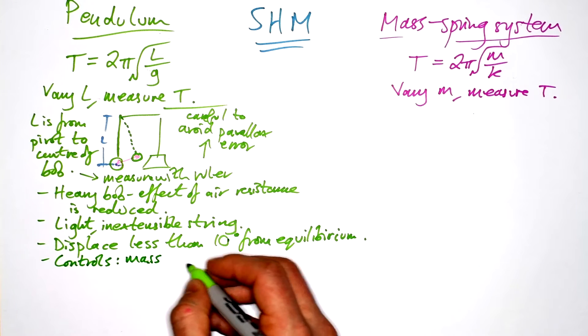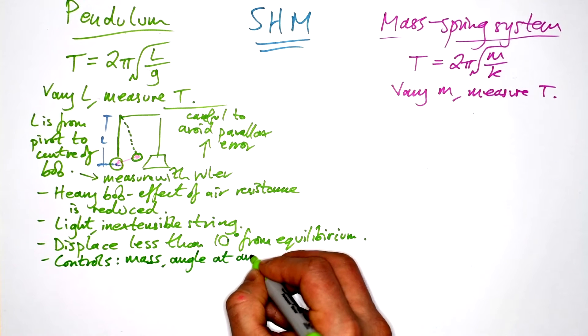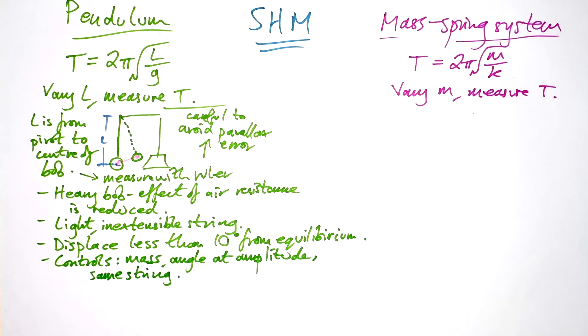And with our controls, we therefore have mass, angle, that's amplitude, that is when we let it go. Same string as well, so we can be sure that the mass doesn't change as we go through the experiment.